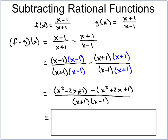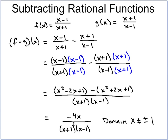The tops we do need to foil out since we're combining them. Foiling gives us x² - 2x + 1 minus (x² + 2x + 1). Putting the tops together: x² - x² cancels, -2x - 2x = -4x, and 1 - 1 cancels. So the numerator simplifies to just -4x, over (x + 1)(x - 1) in the denominator — you can leave it in factored form. The domain is x cannot equal plus or minus 1. And that is how you add and subtract rational functions.